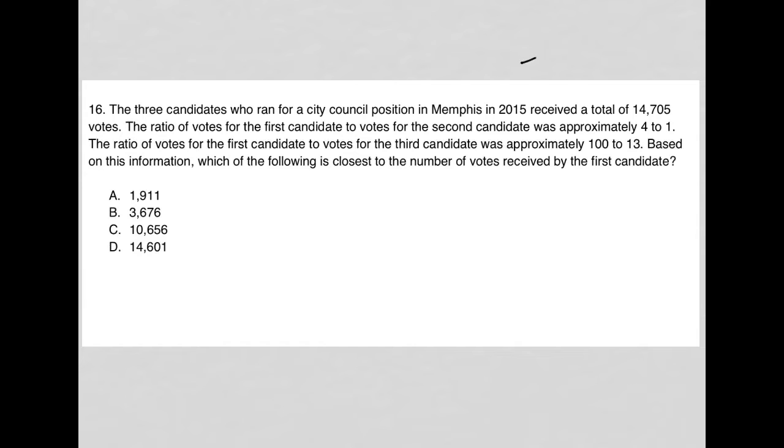So this question looks like it's going to be a translate word problem question. The first sentence here says the three candidates who ran for a city council position in Memphis in 2015 received a total of 14,705 votes. So 14,705 was the total, but it came from three, and I'll just make my rectangles like my three candidates, like the sum of all three of the votes for all three of those candidates is how we arrive at this 14,705.